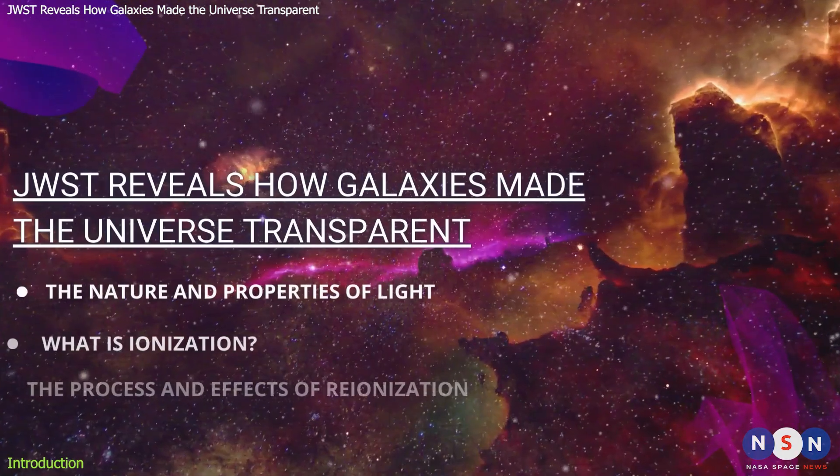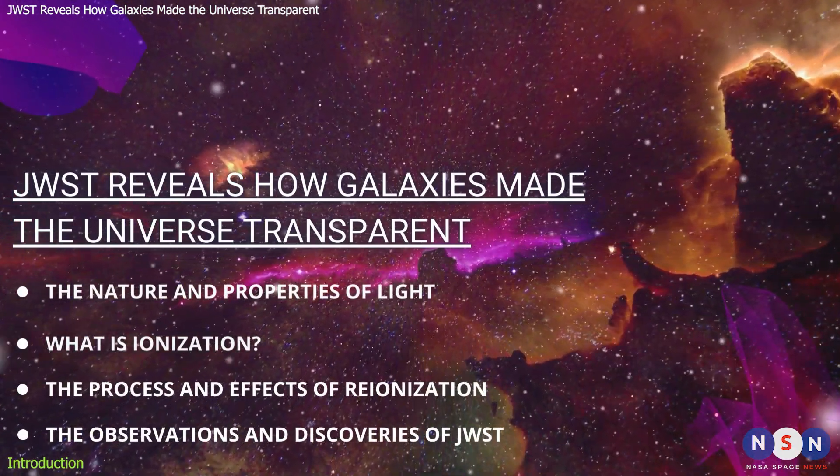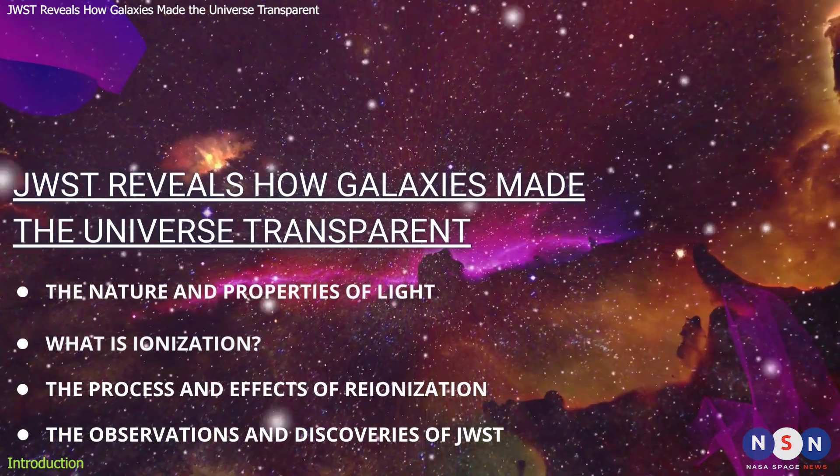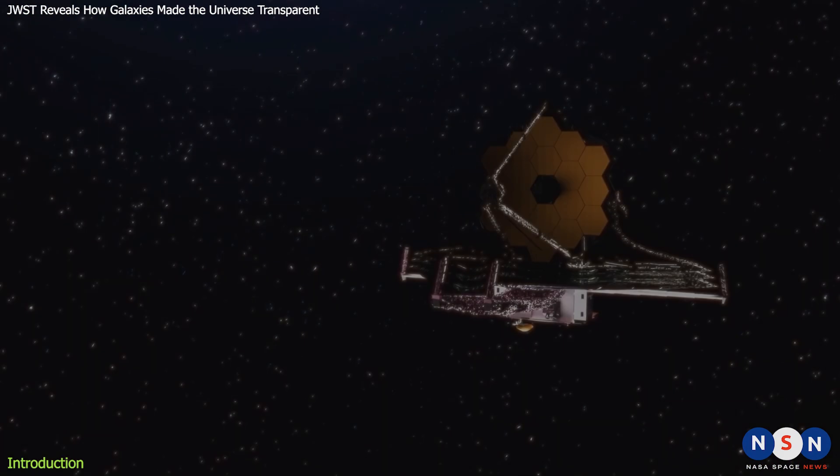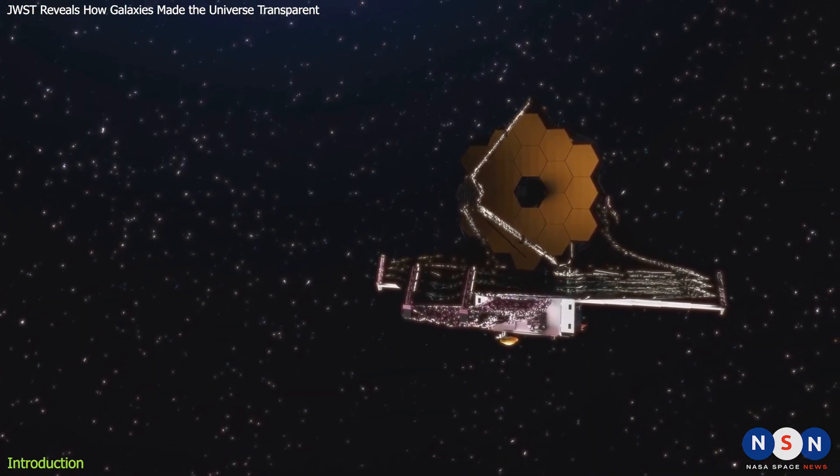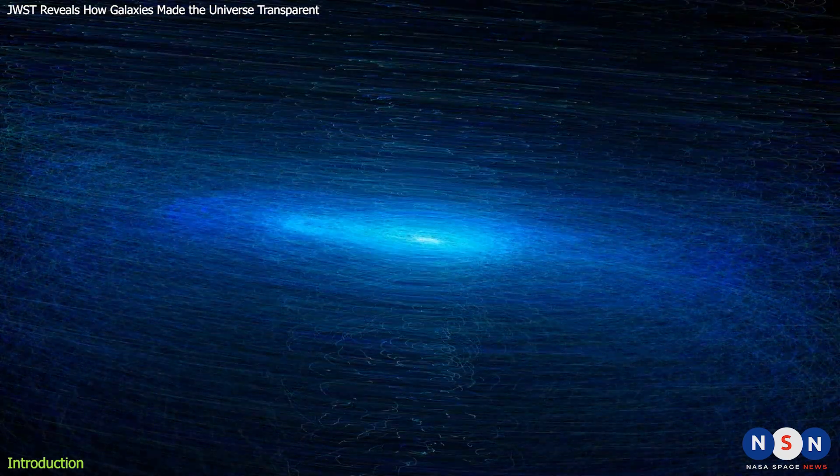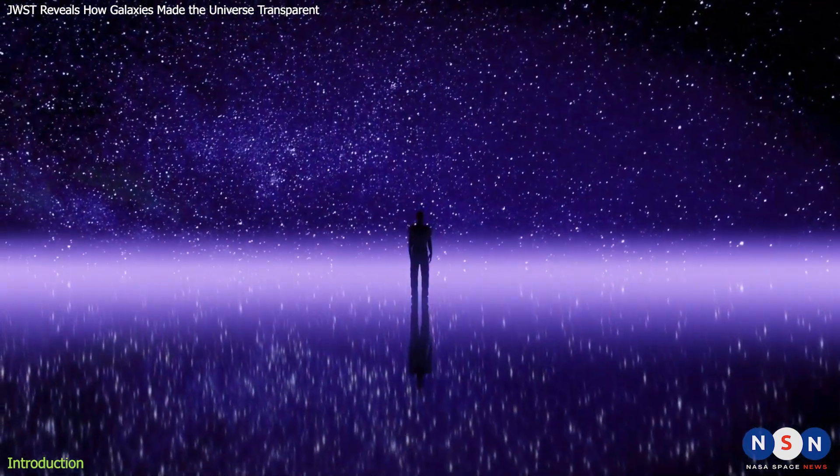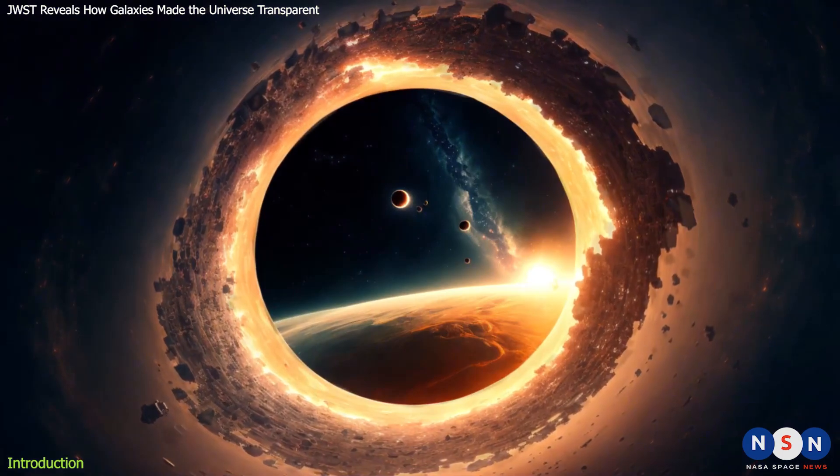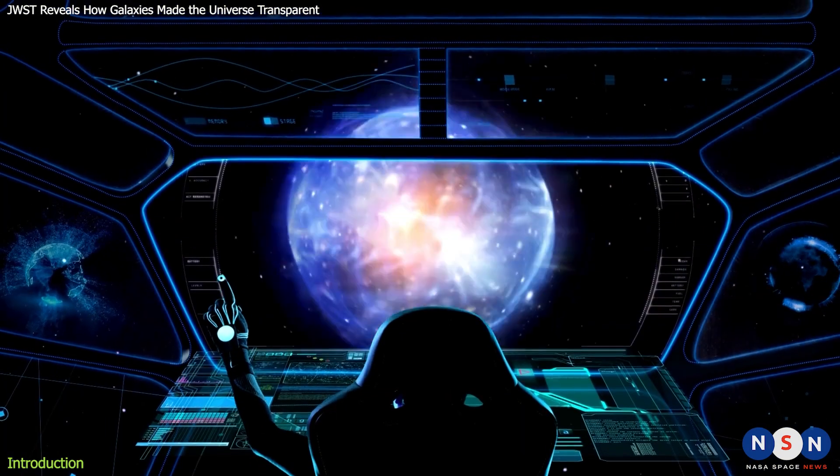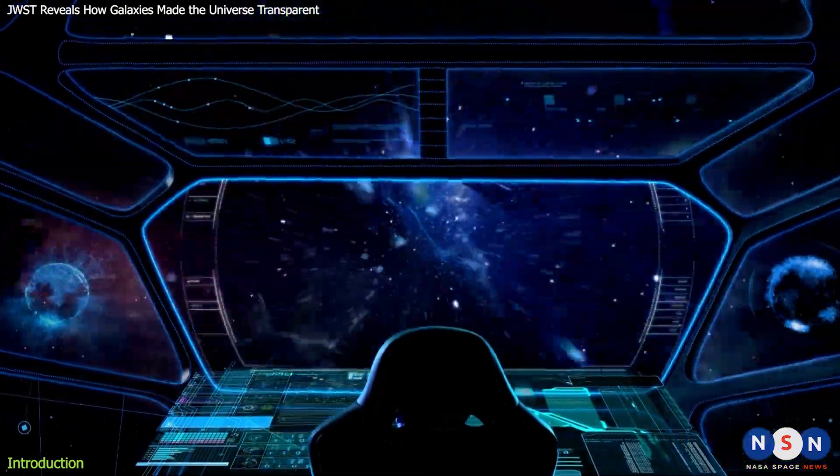In this video, we will explore these questions and learn about the amazing discoveries that have been made by astronomers using the most powerful telescope ever built, the James Webb Space Telescope. We will find out how galaxies made the early universe transparent, how we can observe this phenomenon, and what it tells us about the history and evolution of our cosmos. So buckle up and get ready for a journey through time and space.